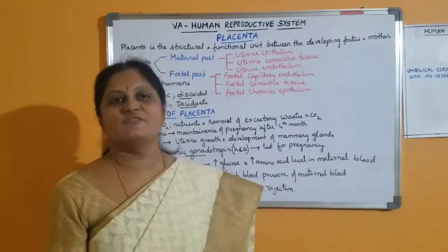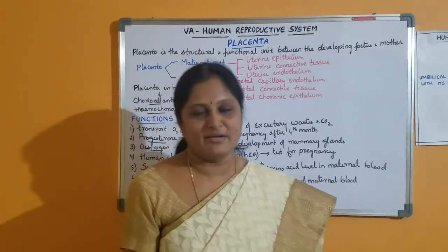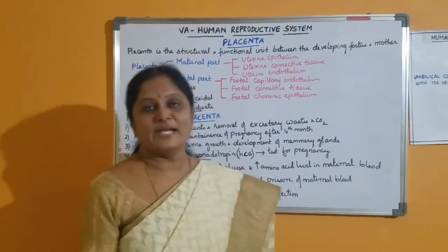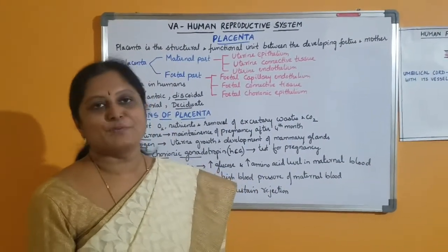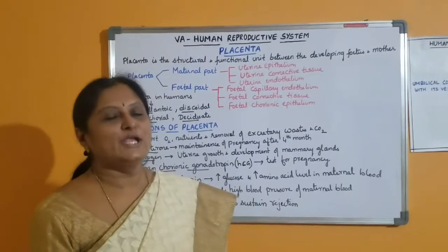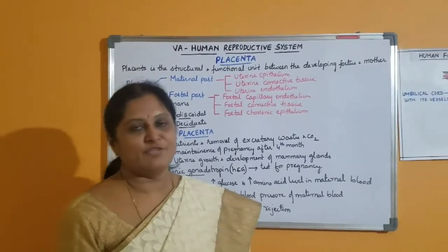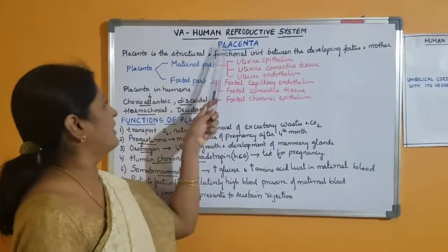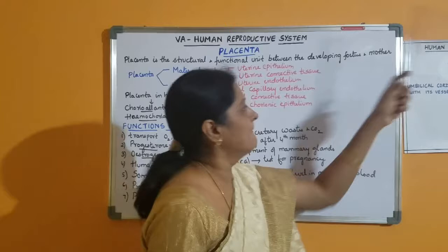In the last class we studied organogenesis in human embryonic development. Today we will see placenta. After implantation, the trophoblast produces finger-like projections called chorionic villi. The chorionic villi and uterine endometrium are interdigitated with each other and they form a structural and functional unit called placenta between the fetus and the mother.